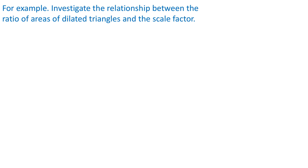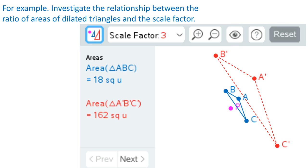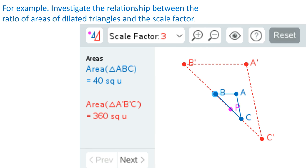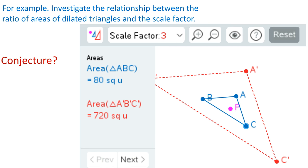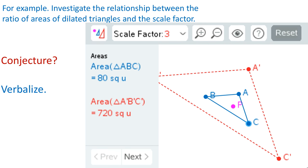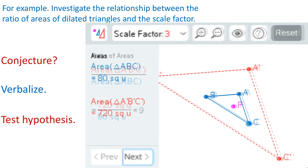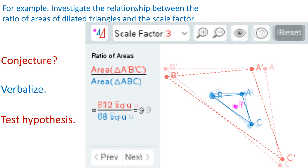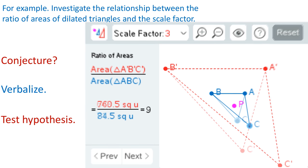Let's investigate the relationship between the ratio of areas of dilated triangles. Students are able to explore many pairs of triangles quickly, make a conjecture, and then verbalize it. Then easily test the hypothesis using the built-in tools that we have supplied and conclude that the ratio of the areas is the square of the scale factor.